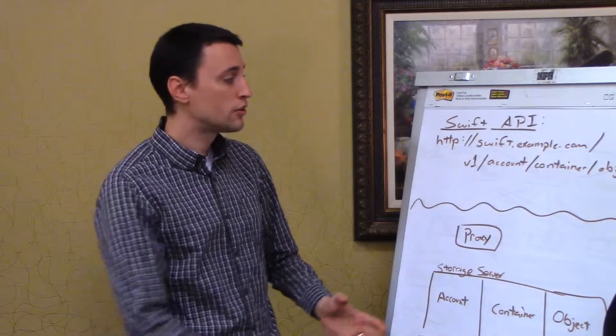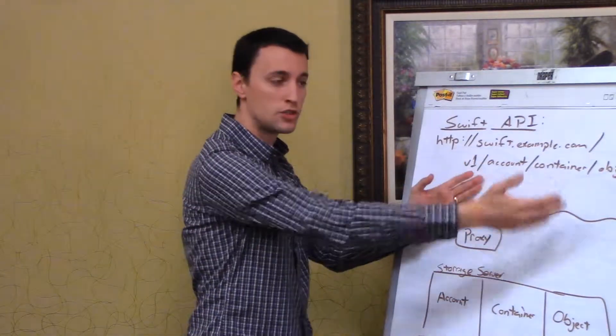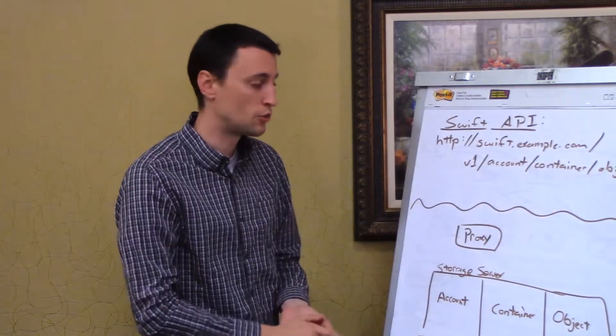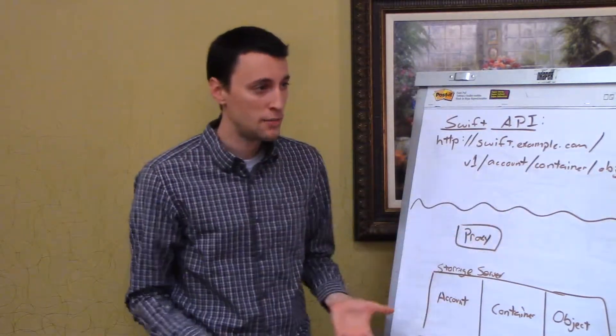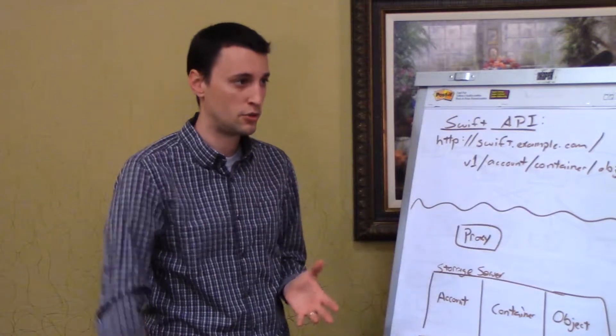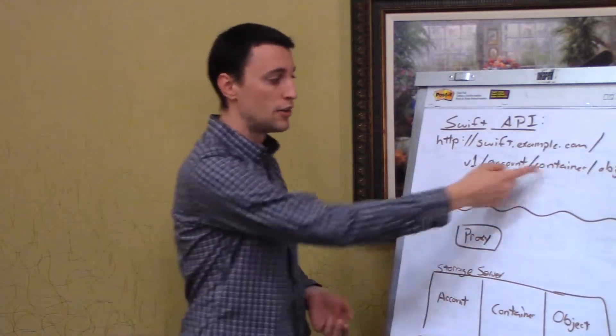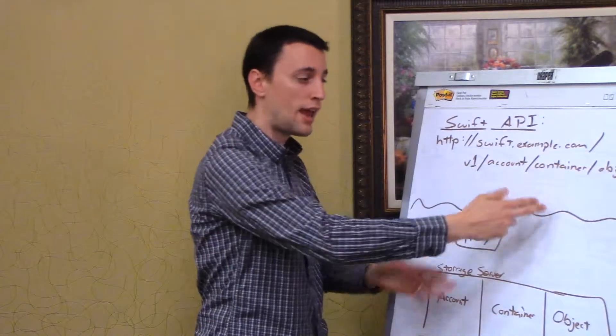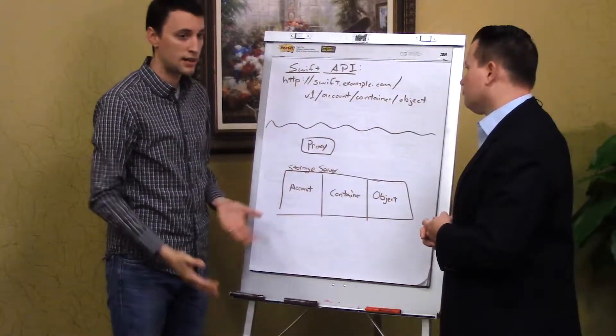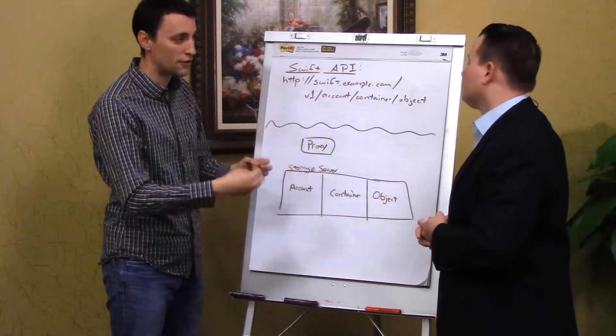That means you can use standard HTTP response codes and verbs to talk to it. And you reference all of your data based on a URL. So this is what an example URL would look like. You talk to your domain, you use the actual version of the API, very consistent version here, but it's always been V1. But the three big pieces of the Swift API are the account, the container, and the object.